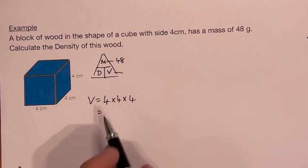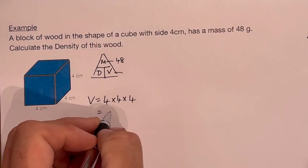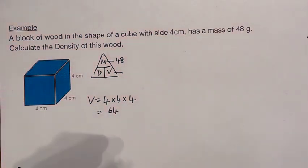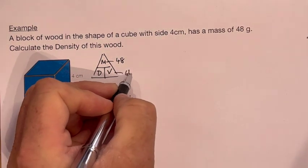Now four times four is 16, and either side of your page or just knowledge, times by another four gives us 64. So we now have the volume at 64.